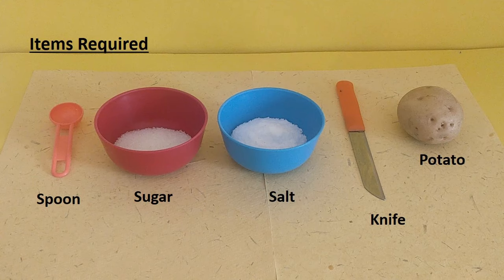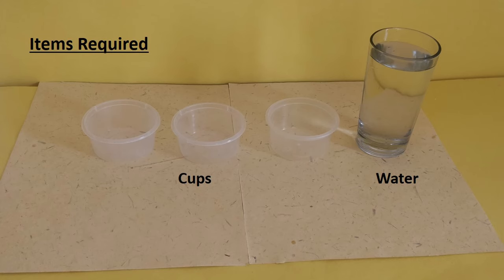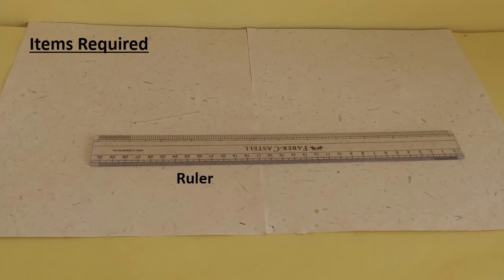For this we will require a spoon, some sugar, salt, a knife and a potato. We will also require 3 cups and some water to make the solutions. Additionally, you will require a ruler to measure the size of the potato strips.